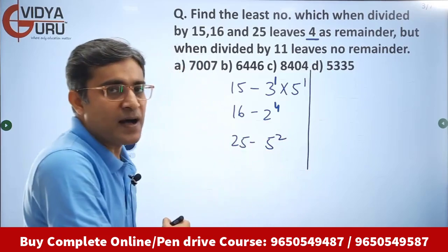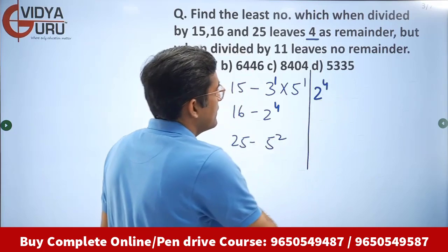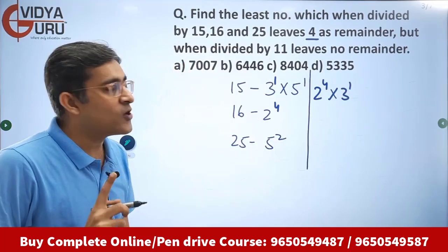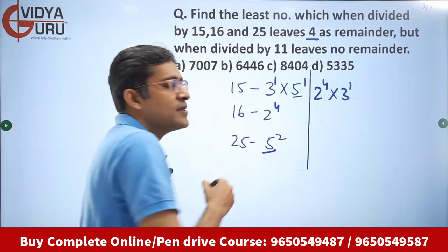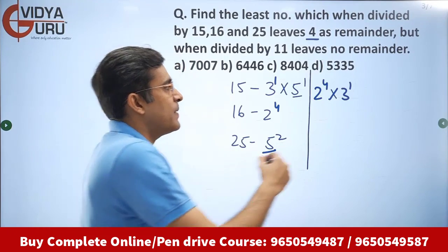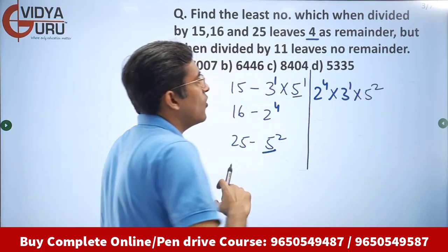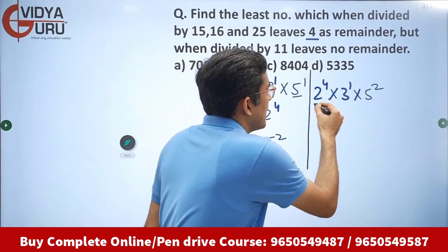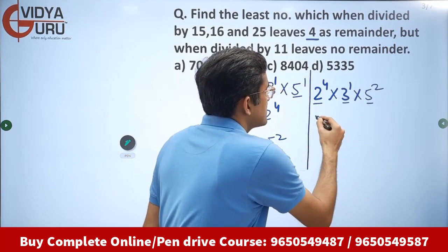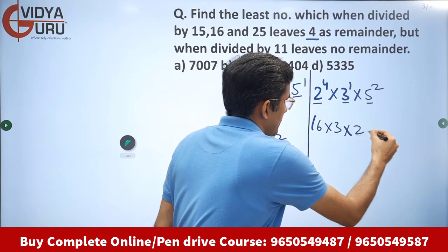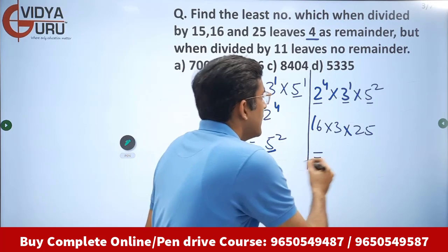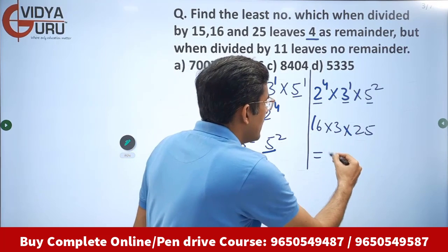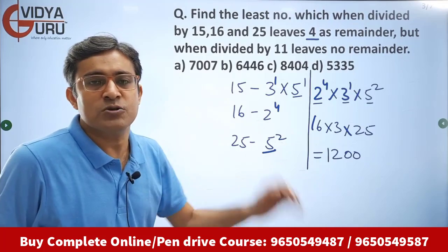Now let's find the highest powers. The highest power of 2 is 2 to the power 4. The highest power of 3 used is 3 to the power 1. For 5, we have power 1 and power 2 — we choose the highest, so 5 to the power 2. Now multiply them: 2 to the power 4 into 3 into 5 squared = 16 into 3 into 25. 25 threes are 75, 75 into 16 gives 1200. So the LCM is 1200.